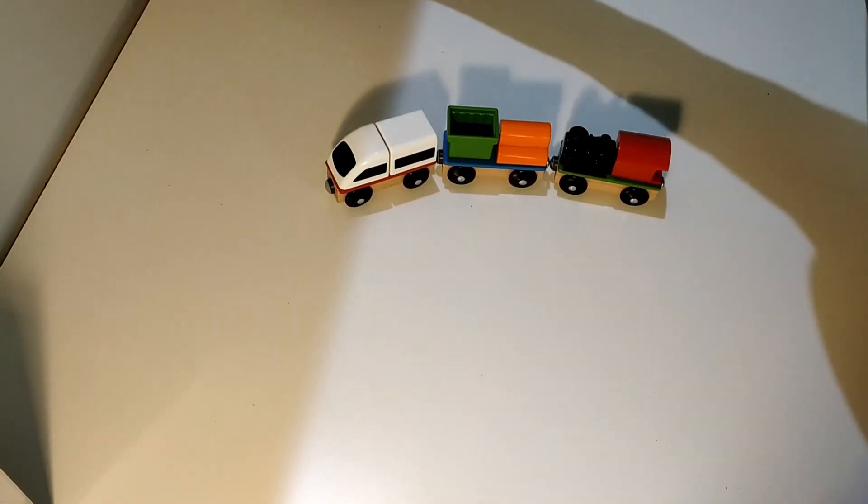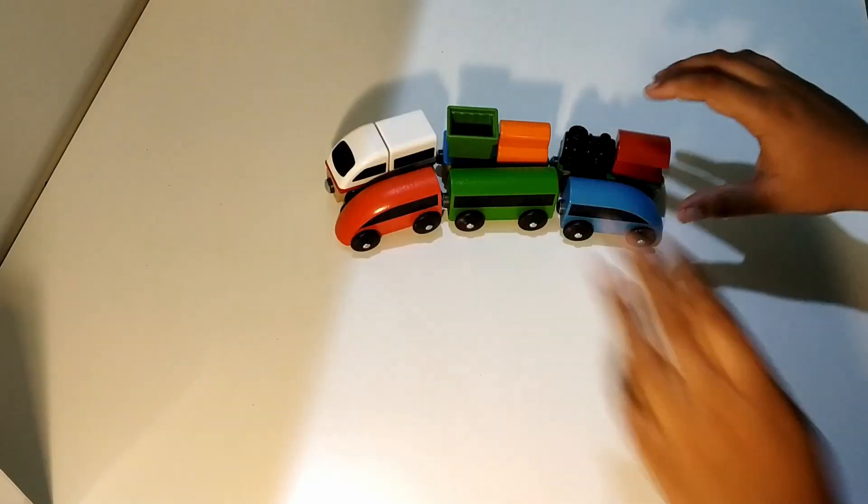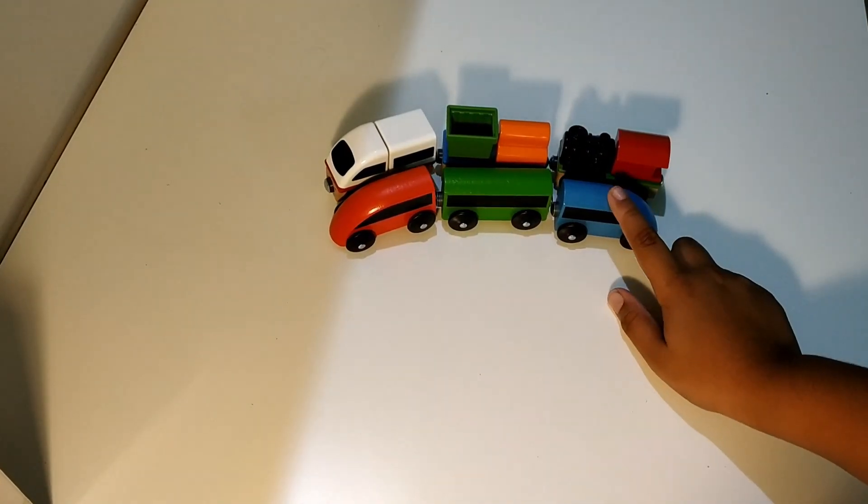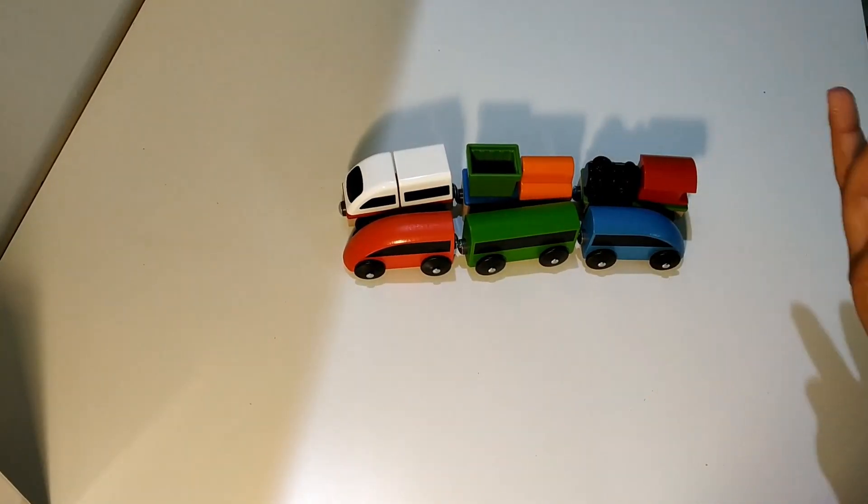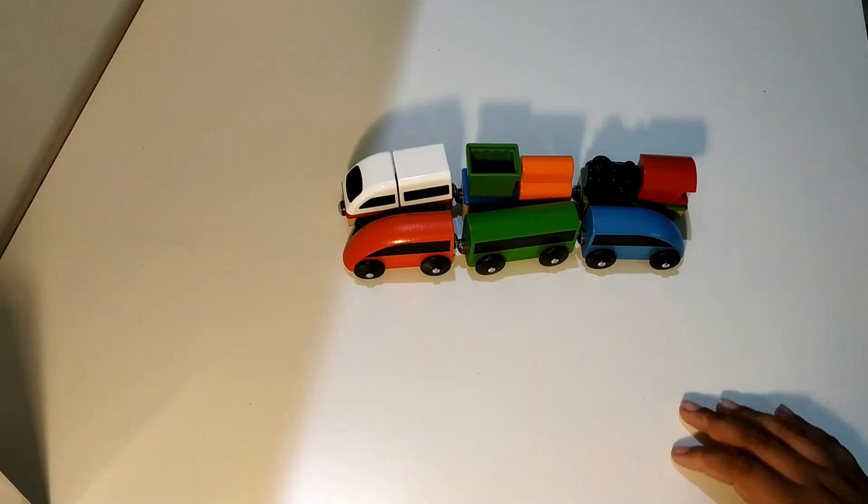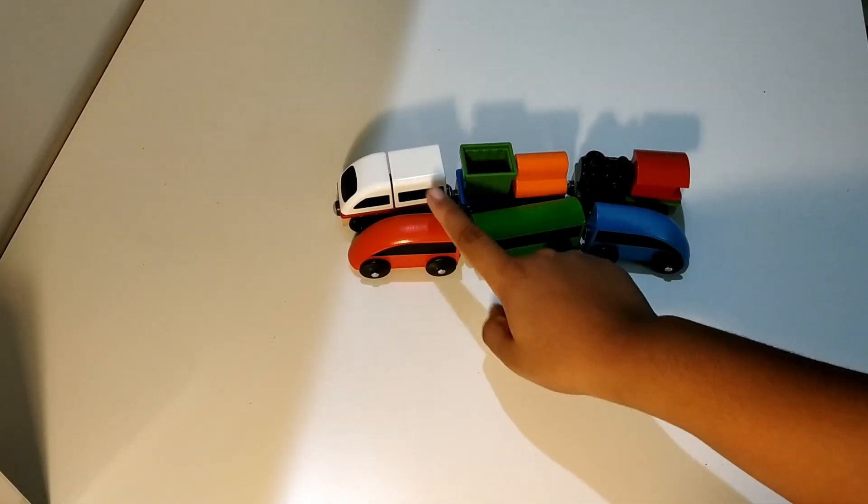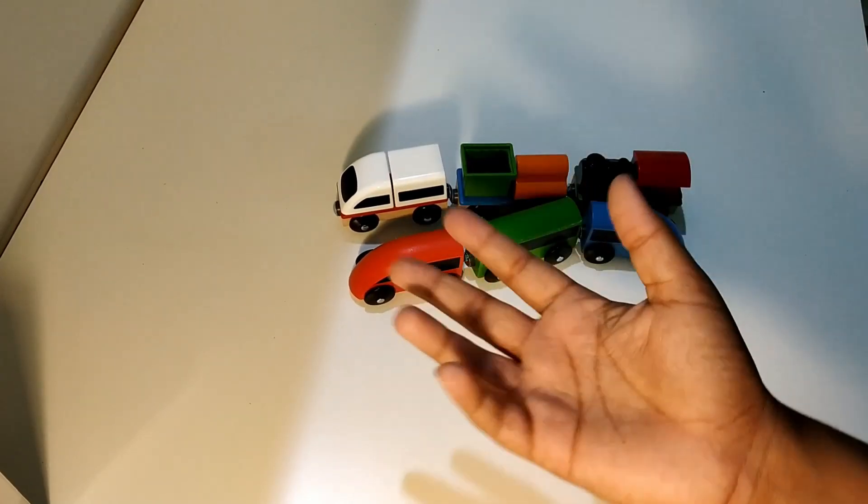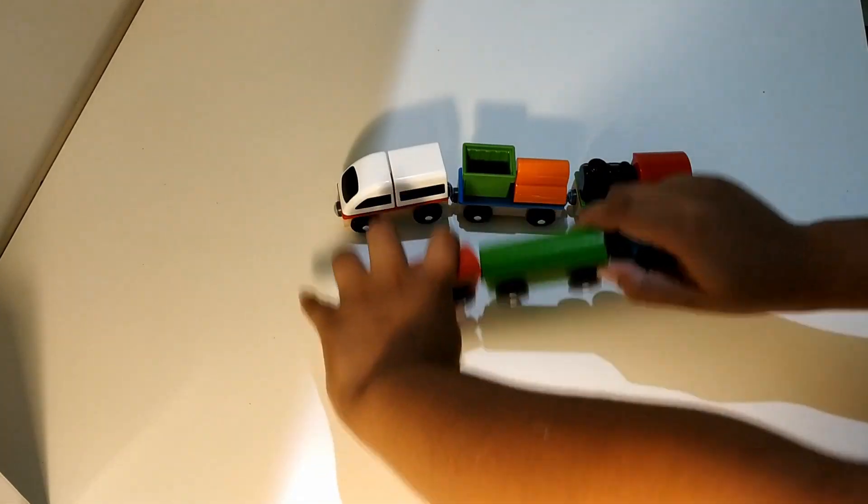So guys, as you could see, these are the normal Ikea trains. As you could see guys, lengthwise the old one and the new one are virtually the same. So yeah, these toys are fully made of wood and they come free with the Lillabo train set. I'll set this aside.